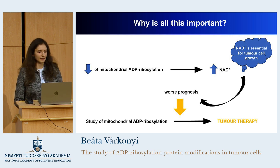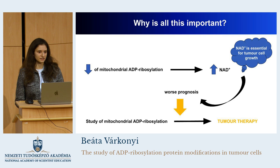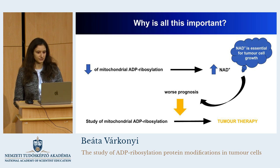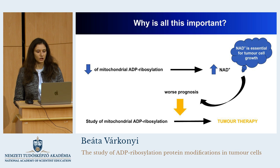Hypothetically, if the level of mitochondrial ADP ribosylation decreases in advanced tumors, it means that the level of its substrate, NAD, will increase. We know that NAD is essential for the growth of tumor cells, so this could explain why the lower levels of mitochondrial ADP ribosylation are associated with worse prognosis and worse survival rate in cancer. For this reason, we can see how the understanding of mitochondrial ADP ribosylation could lead to new and innovative solutions in tumor therapy.